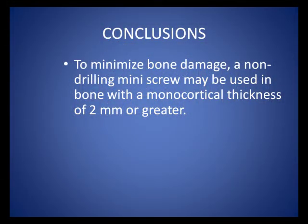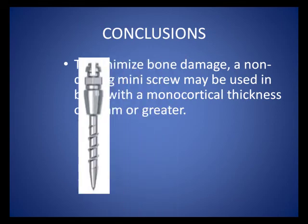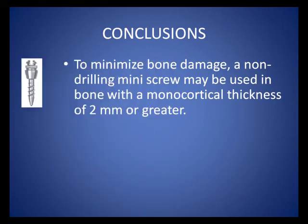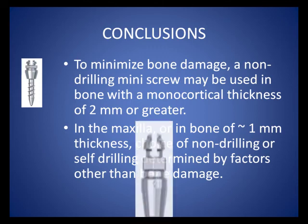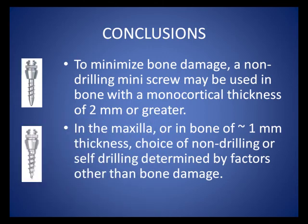If the goal is to limit the amount of micro-damage accumulation, non-drilling mini-screw implants may be used where the monocortical plate thickness often exceeds 2 mm, such as that frequently encountered in the mandible. In contrast, the choice of a self-drilling or non-drilling mini-screw implant in the maxilla or in bone of approximately 1 mm thickness will be determined by factors other than bone damage.